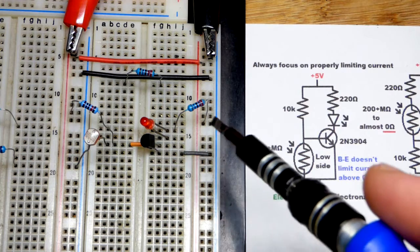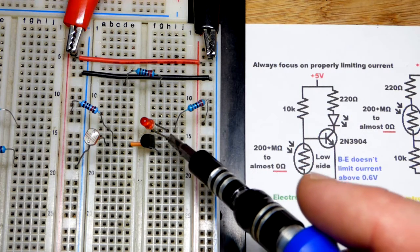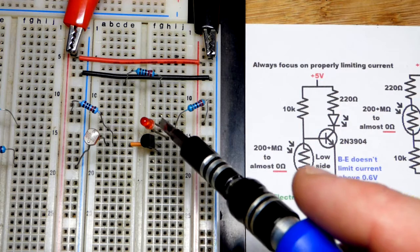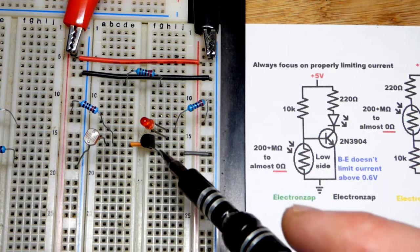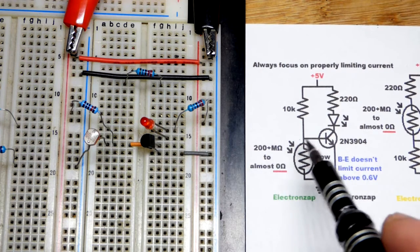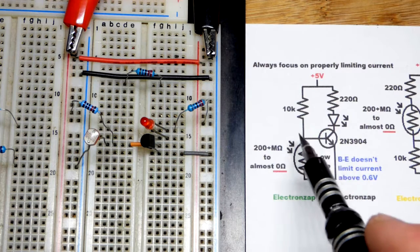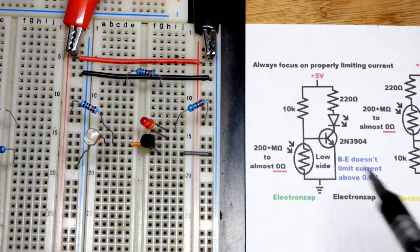Resistor to the long lead of the LED, short lead to the collector, base is that middle pin, and the emitter going to ground. So there is no real current limiting from base to emitter once you exceed 0.6 volts.